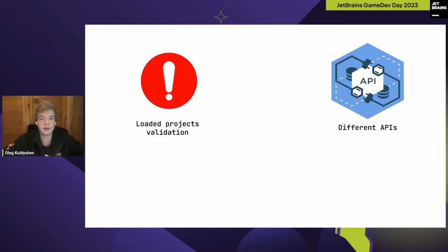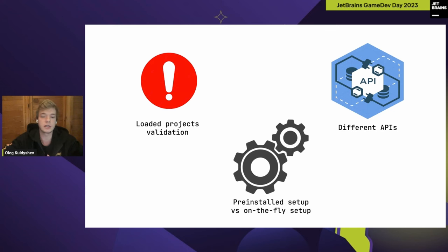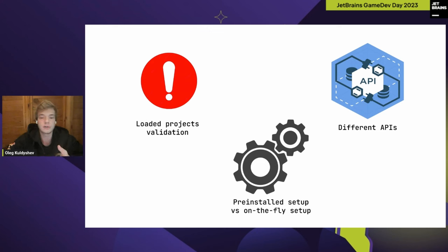Another difference is that .NET tests set up their environment on the fly, whereas Unreal Engine tests need pre-installed environments on separate machines. This is because Unreal Engine itself is huge and massive — setting it up with every single test run is absolutely useless.